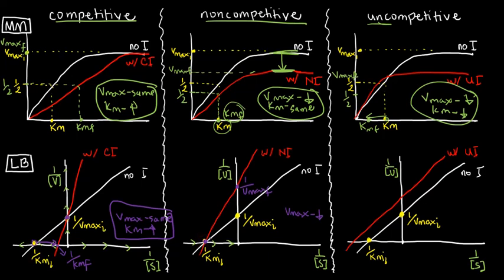But the red line intersects at the x-axis at the exact same point. Well, in real life, it's not exact. But just assume it's almost the same point as the white line. So that means the KM is pretty much the same. And it's the same thing we have a while ago.